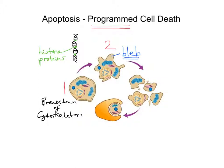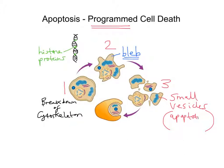In step three, the DNA is broken into fragments and the whole cell is broken into small vesicles or sacs. These small vesicles are known as apoptotic bodies. So step three gives us the breakdown of DNA into fragments and the whole cell broken into these small apoptotic bodies. This is covered in detail primarily for key stage five OCR Biology students.